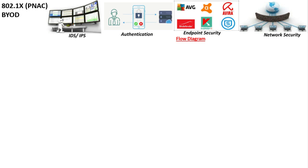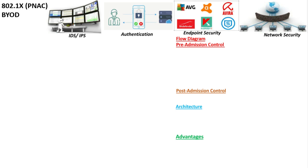In this video I will first discuss the flow diagram of network access control including its various components, then I will discuss the pre-admission control process, the post-admission process, the architectural options available for network access control, and finally certain advantages.